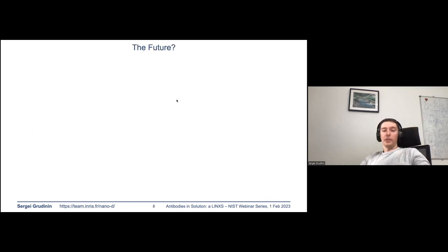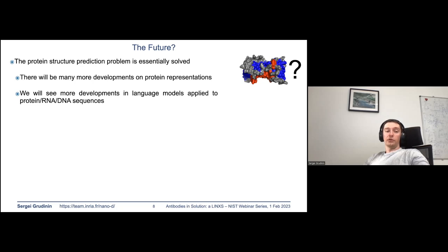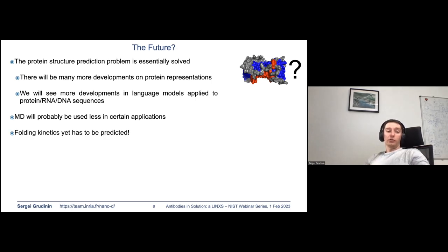We believe the classical protein structure prediction problem is essentially solved, but there are still many developments around protein representations, exciting work using protein language models, and applications to other molecules such as RNAs and DNAs. Molecular dynamics will still be used in some areas — specifically, the protein folding problem also involves protein kinetics, and folding kinetics still has to be predicted.